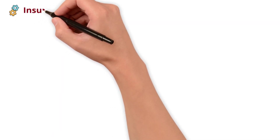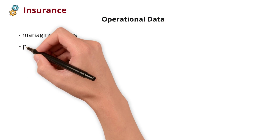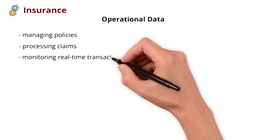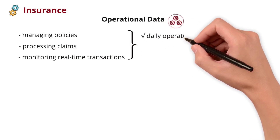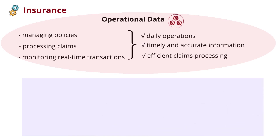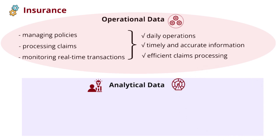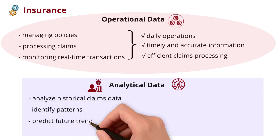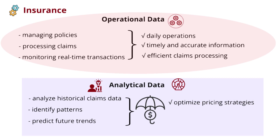Shifting to the insurance industry, operational data is crucial in managing policies, processing claims, and monitoring real-time transactions. It ensures the smooth functioning of daily operations, providing timely and accurate information for policyholders and facilitating efficient claims processing. On the other hand, businesses utilize analytical data for intelligence and risk assessment — analyzing historical claims data, identifying patterns, and predicting future trends to optimize pricing strategies and assess risks more effectively.